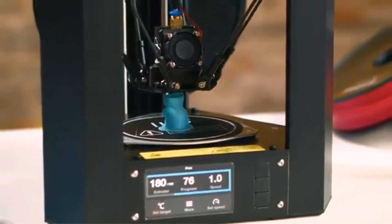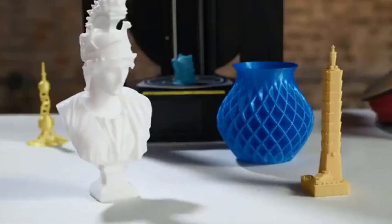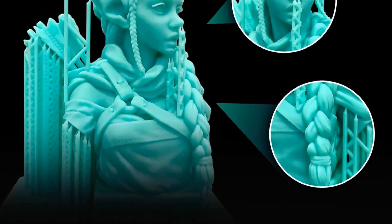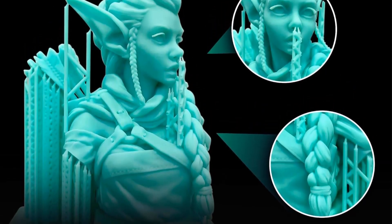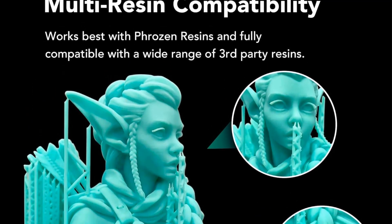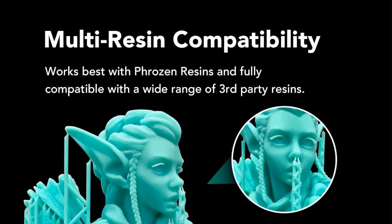Operating the Sonic Mini is easy and straightforward. Users can quickly set up the building platform, resin vat, and install the Chitubox slicing software. With just a few clicks, users can add printing parameters, slice their file in the software, save it, and upload it onto the printer.